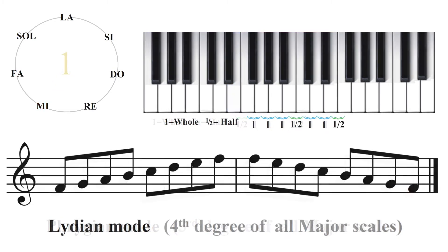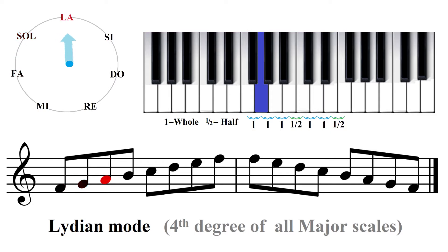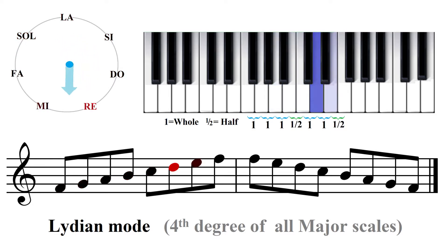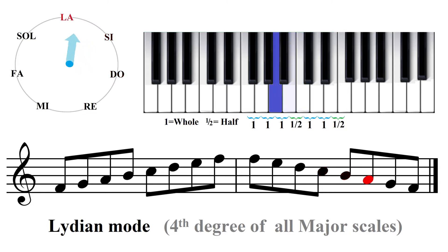Moving up to the fourth degree of Do major, we have the Lydian mode, beginning on Fa. Fa, Sol, La, Si, Do, Re, Mi, Fa. Fa, Mi, Re, Do, Si, La, Sol, Fa.